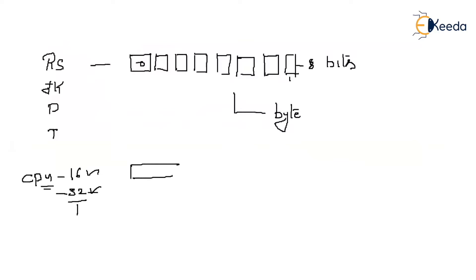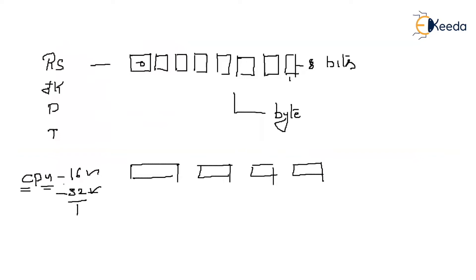That is byte 1, byte 2, byte 3, and byte 4, with each byte holding 8 bits of information. This is what a CPU architecture is about — the CPU requires a specific data size to operate.